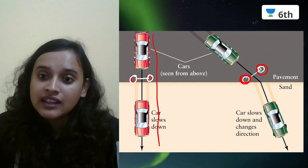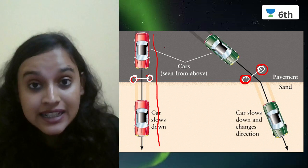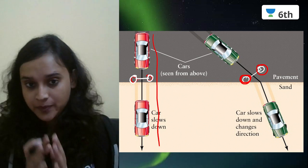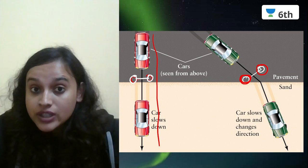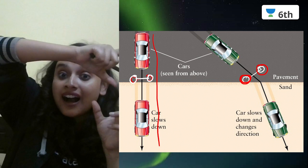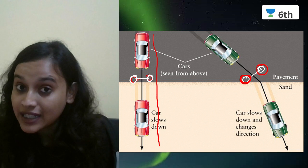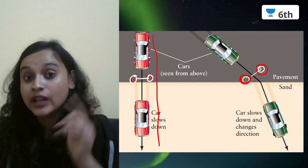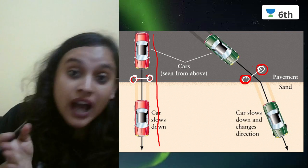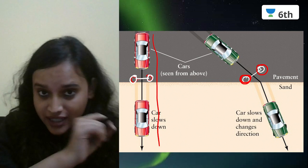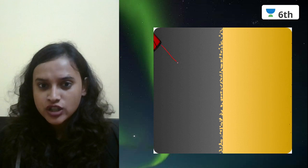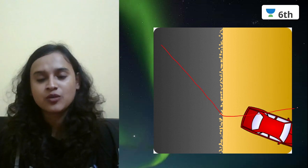The first wheel that hits the sand slows down before the second one, and because of this difference, the car's direction changes. The same thing happens with light. When light travels from one transparent medium — such as air — into another transparent medium — such as water — if light comes straight, there is no direction change, only slowing. But if light comes at an angle, some particles hit the new medium before others, slowing down first, and the direction of light changes.